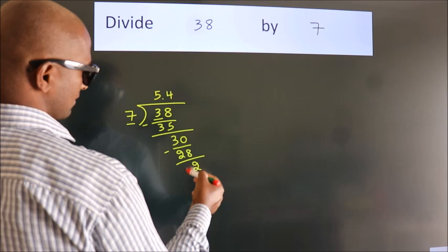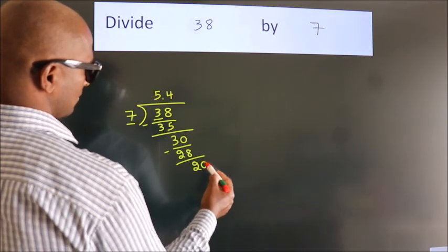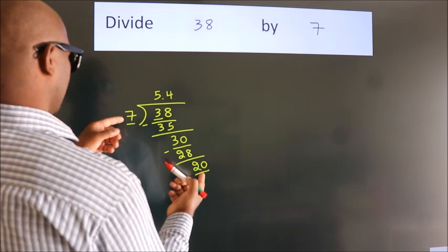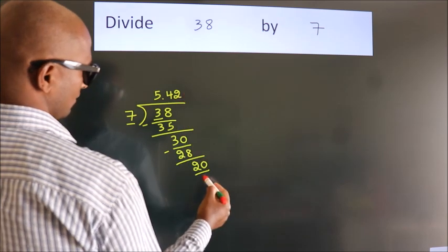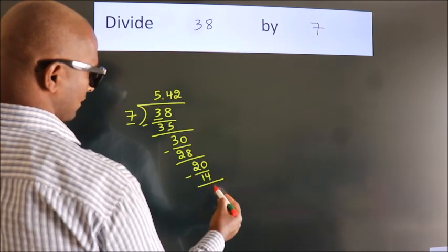After this, we already have the decimal, so directly take 0. So 20. A number close to 20 in the 7 table is 7 twos, 14. Now we subtract. We get 6.